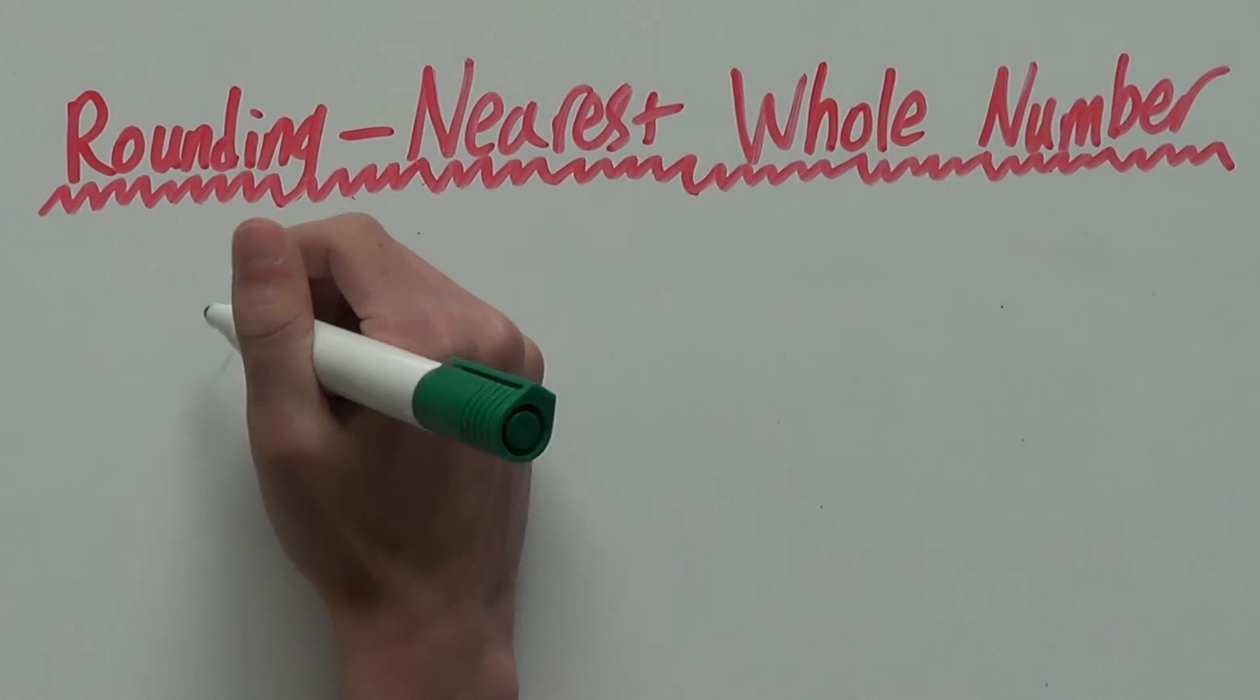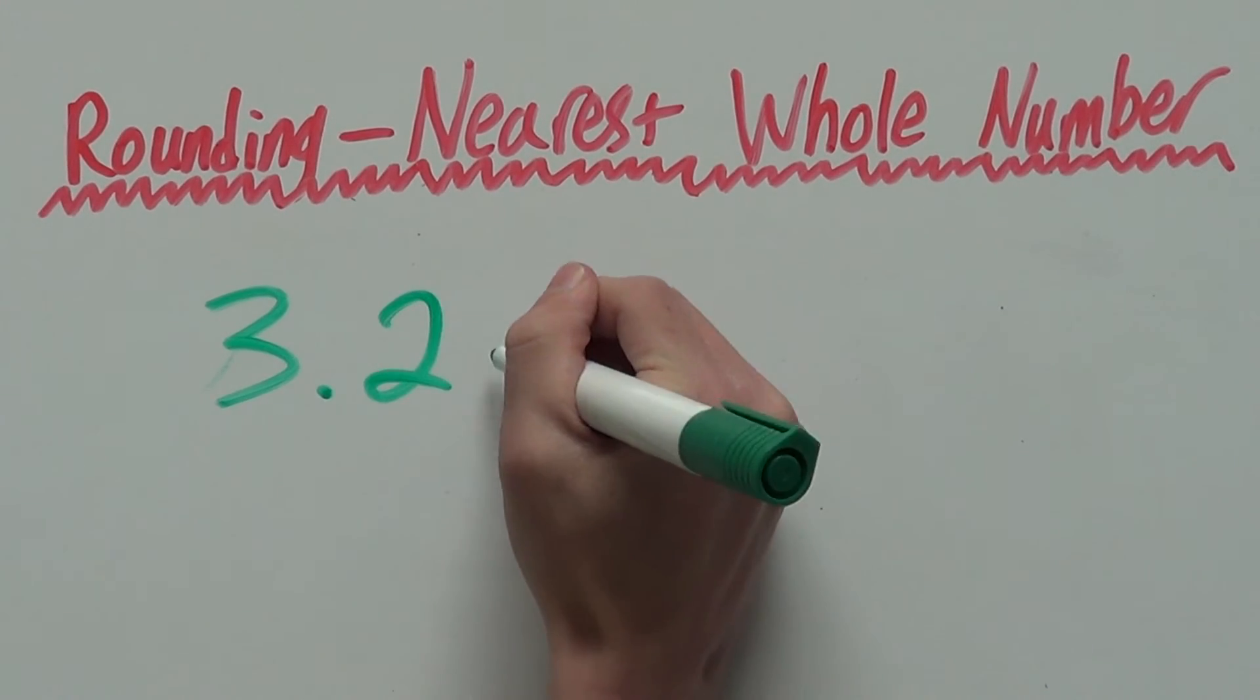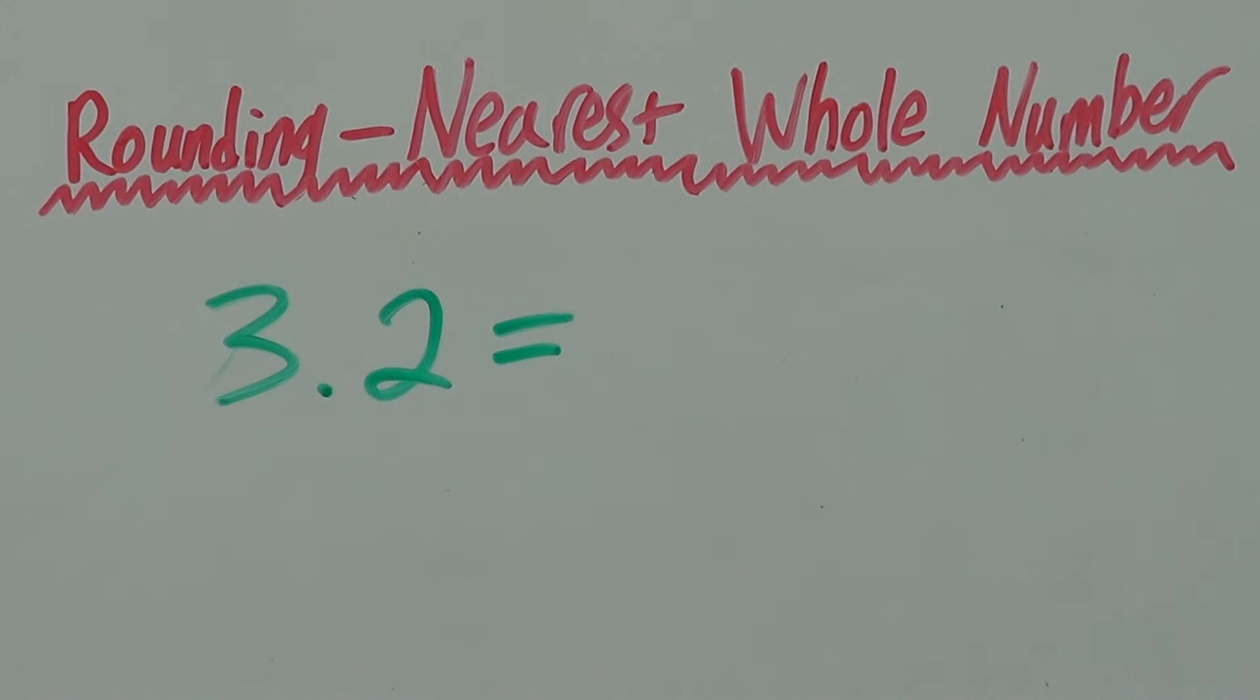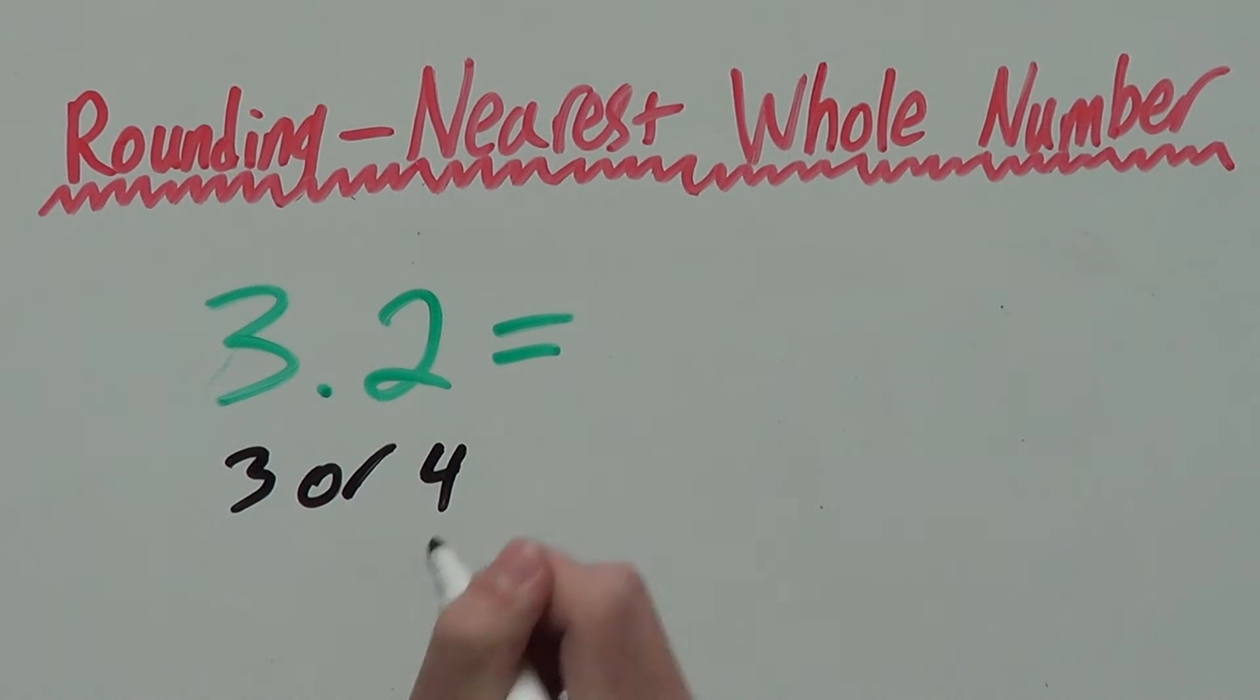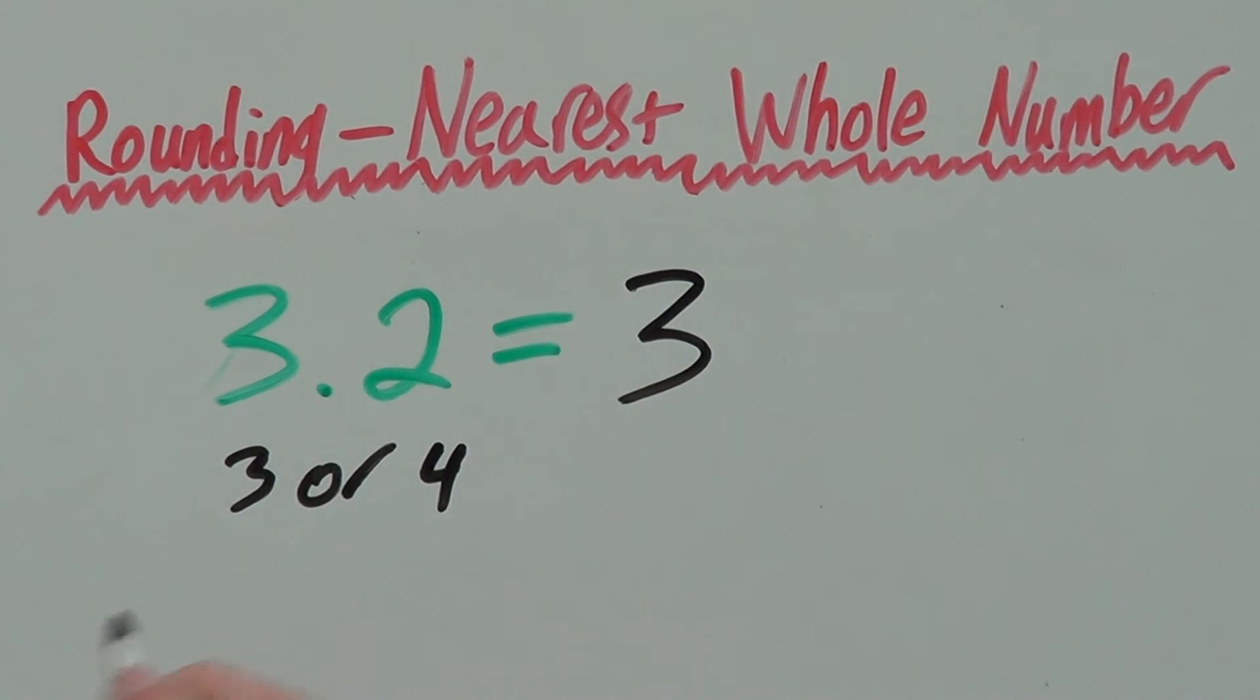Let's try 3.2. 3.2 rounded, would it be rounded down to 3 or up to 4? Well, 3.2 is closer to 3, so we round it down to 3.